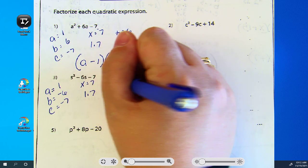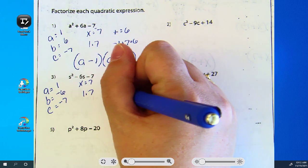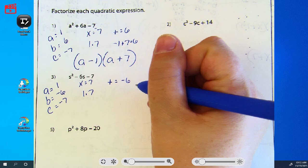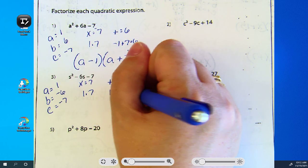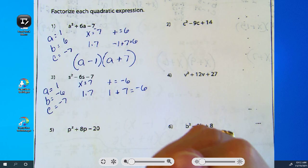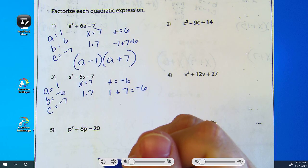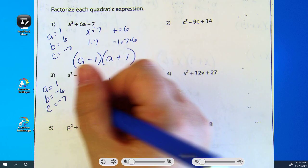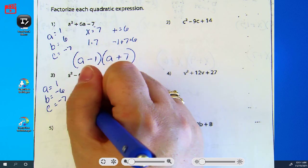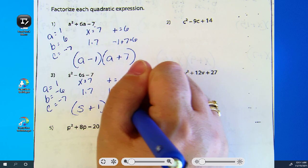How did you add to get negative six? How did you add your one and seven to get negative six? Yeah. Make the seven negative. Good. And you have s plus one, s minus seven.